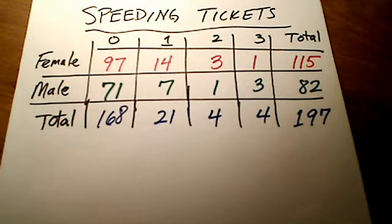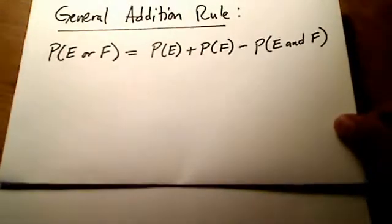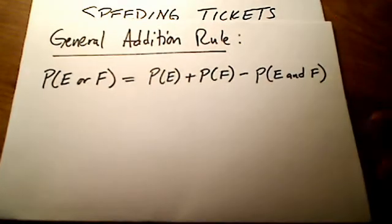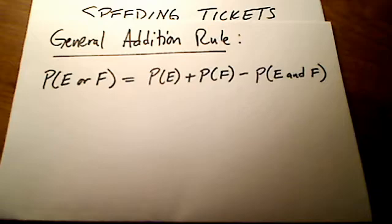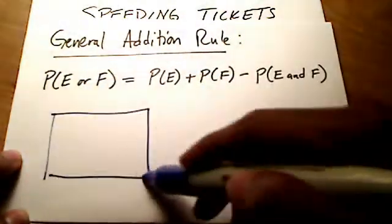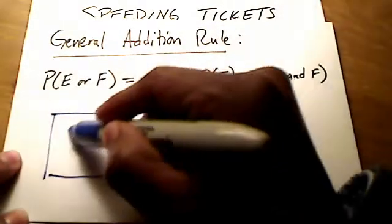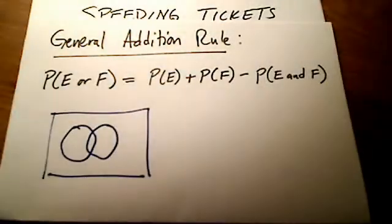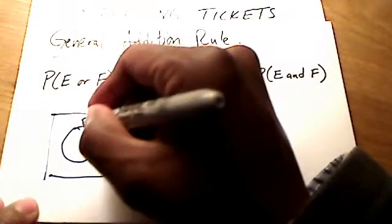Let me quickly review something we're going to need throughout this problem - the general addition rule, something you should know. The way this works, I showed this in a previous video, is with a Venn diagram. Let me draw one here. E and F - these two circles represent these events, E and F.